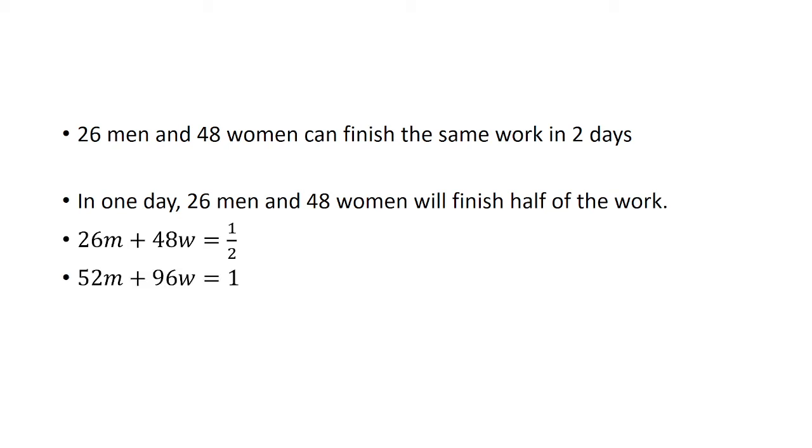So the equation that we have is 26m plus 48w equals 1 half. And if I multiply both sides by 2, I get 52m plus 96w equals 1. So that means if we have 52 men and 96 women, they will finish the job in one day.